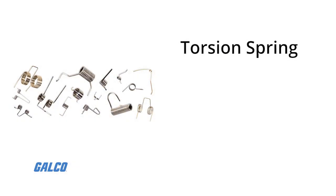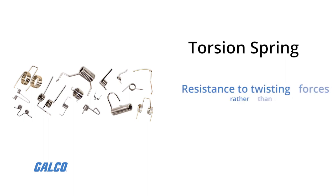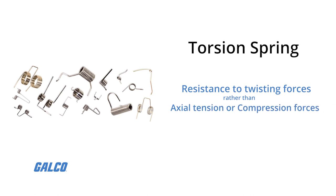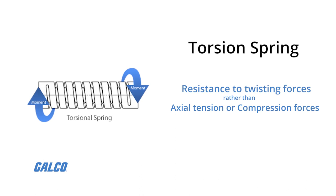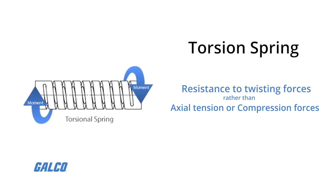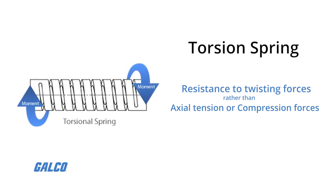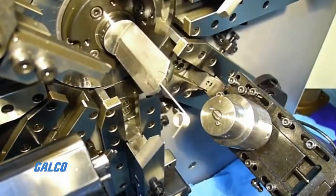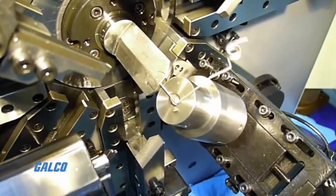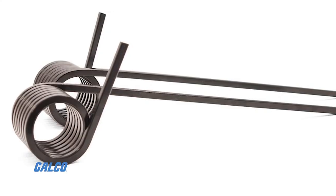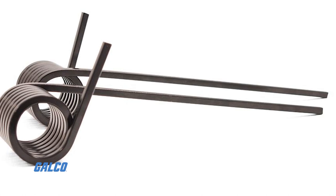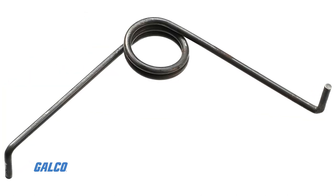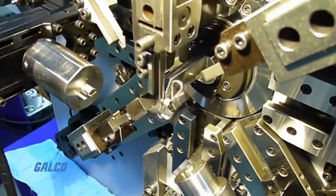The third type of common industrial spring is the torsion spring. These are designed for applications that need resistance to twisting forces rather than axial tension or compression forces. Torsion springs are helically wound springs with arms on the ends that rotate about the spring's central axis. The arms are connected to external components which apply a load to the spring. It is important to note that the load on a torsion spring should only be applied in the direction that causes the spring's diameter to decrease.